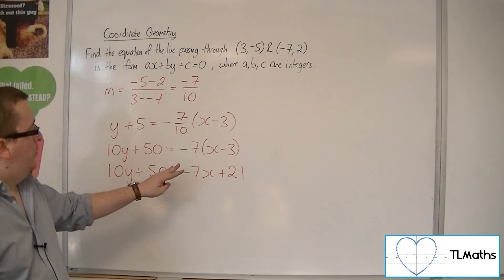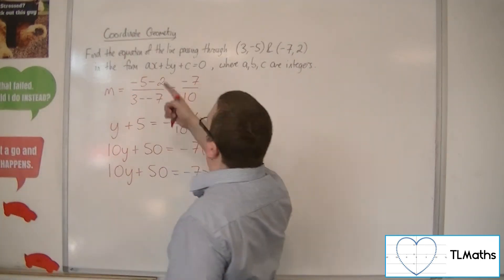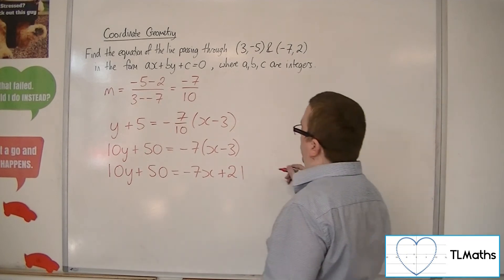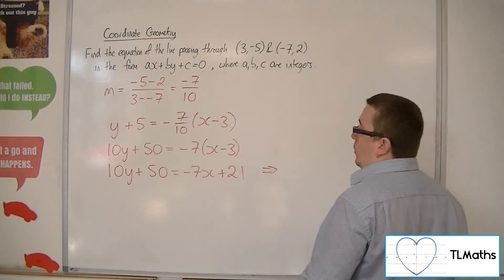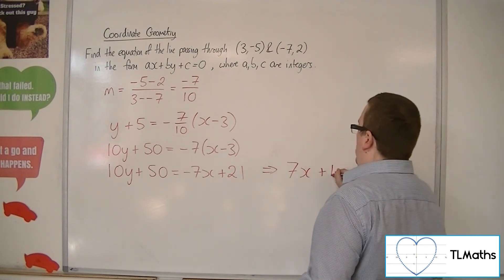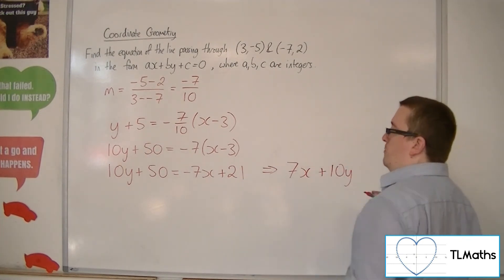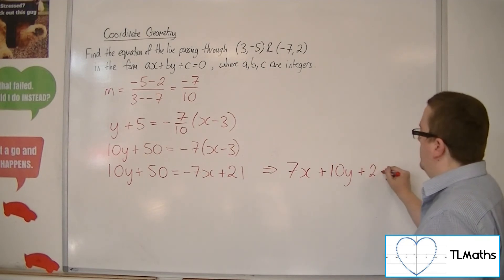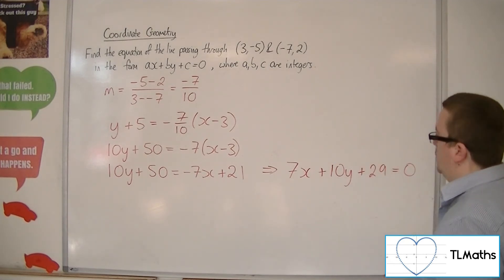And now you can move everything onto one side of the equation, like they have in this form. So add the 7x to both sides. We've got the 10y, and then take 21 from both sides, will give me 29 left over, is equal to 0.